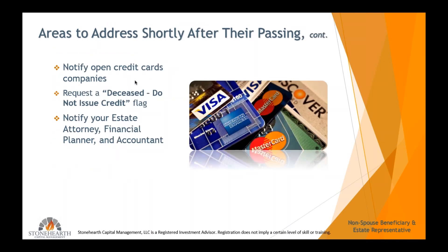Find out if there are life insurance policies — call them. Cancel memberships, subscriptions, and insurance policies. Notify open credit cards — the Kohl's card, the Visa. Talk to them if there are outstanding balances; your attorney will often settle those through the estate. Request a 'deceased, do not issue credit' flag on each of the three credit bureaus in writing. Notify the estate attorney, financial planner, and accountant — in the first couple of weeks after someone passes away, reach out to those three parties because there are things they may need to do.